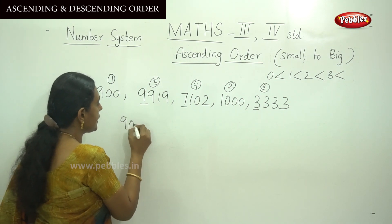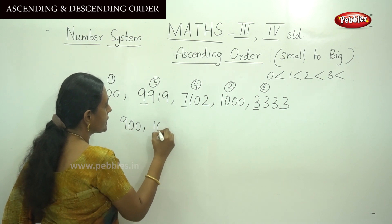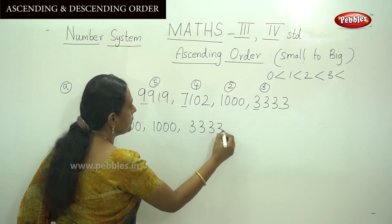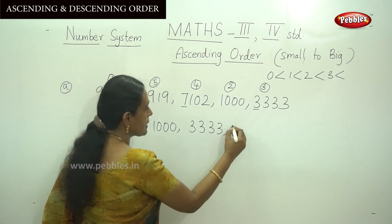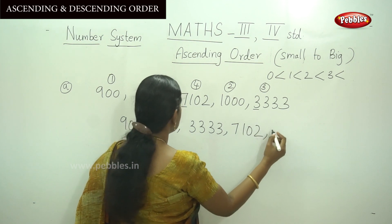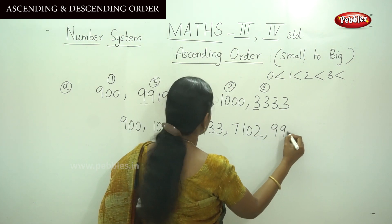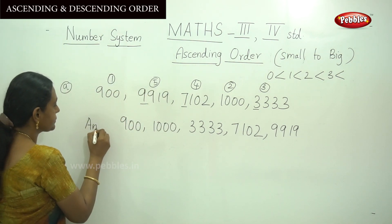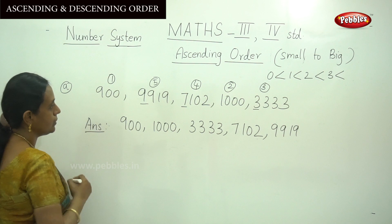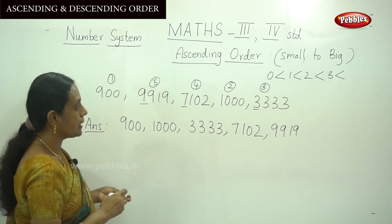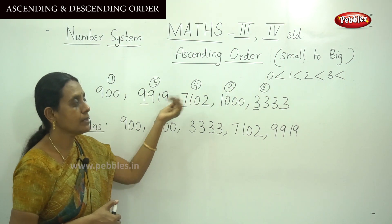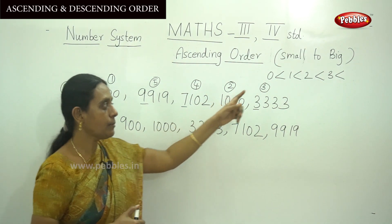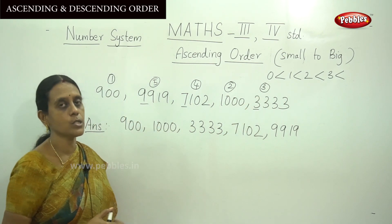So write down the answer in ascending order: 900, next is 1000, then 3333, then 7102, and finally 9919. This is how we arrange numbers in increasing order using the technique of counting digits and comparing from left to right.